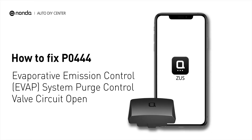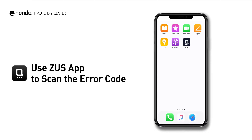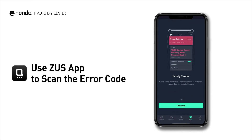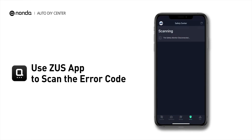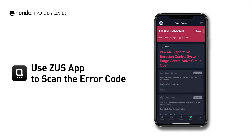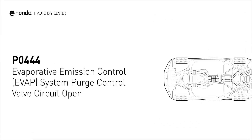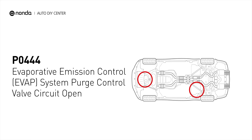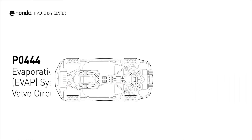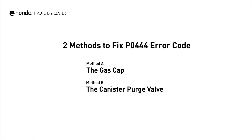If you are getting a PO444 error code, this video is going to show you two practical solutions to fix the error code at home. Use the Zeus app to scan your vehicle and see the error code PO444. It refers to a detected issue with the evap circuit. Here are two simple DIY methods you can try to solve this problem.